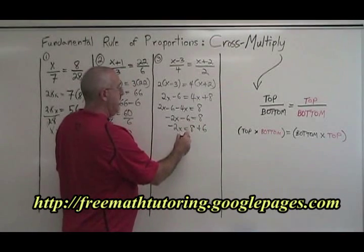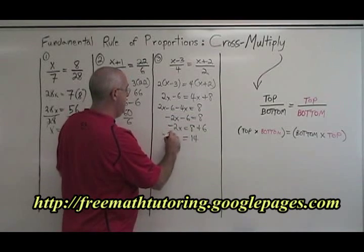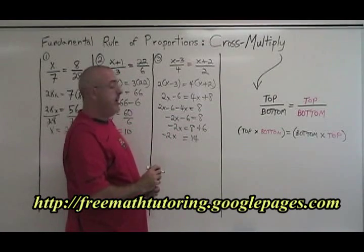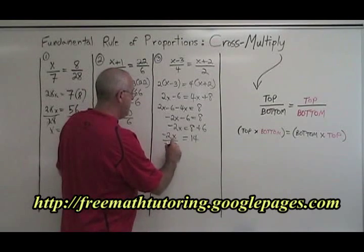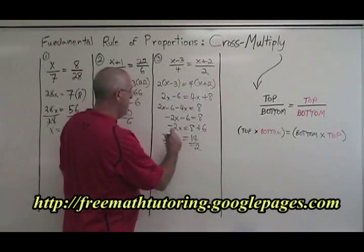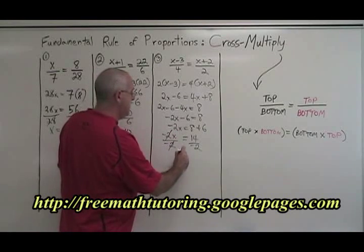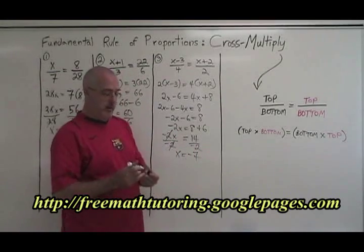Simplify. 8 plus 6 is 14. Negative 2x equals 14. Finally, our x is being multiplied by a negative 2, so we divide both sides by negative 2. These cancel. x is equal to negative 7. We have our answer.